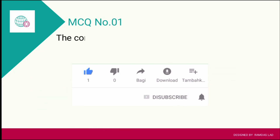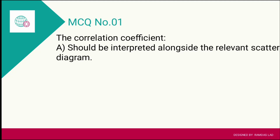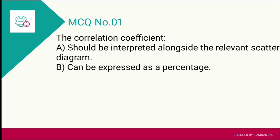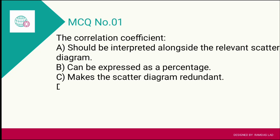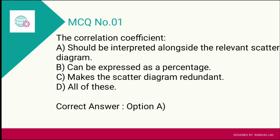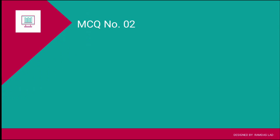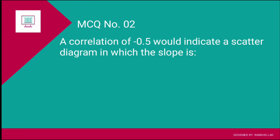Question number one: The correlation coefficient — what is its meaning? The options are: A) should be interpreted alongside the relevant scatter diagram, B) can be expressed as a percentage, C) makes the scatter diagram redundant, D) all of these. If you read the definition carefully, the correct answer is option A — it should be interpreted alongside the relevant scatter diagram.